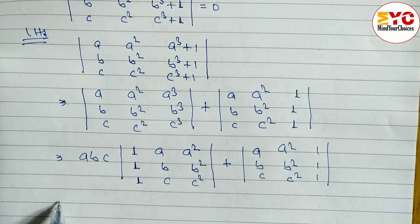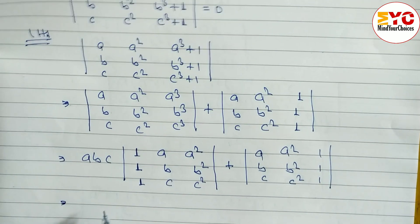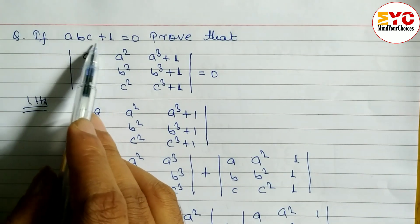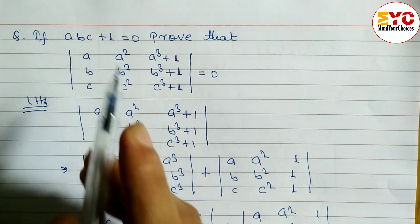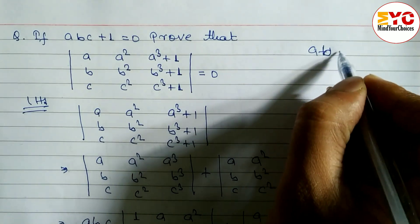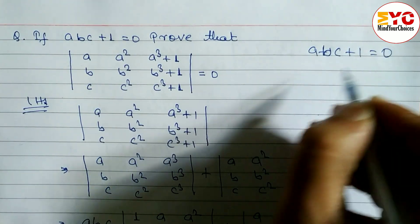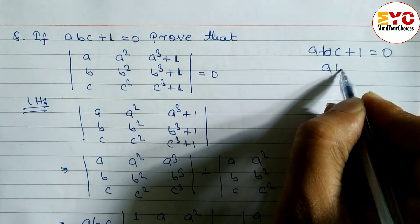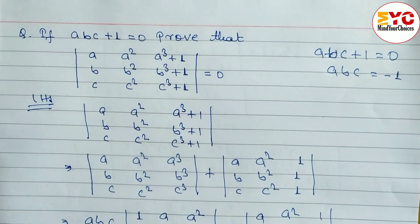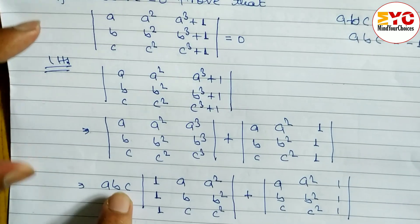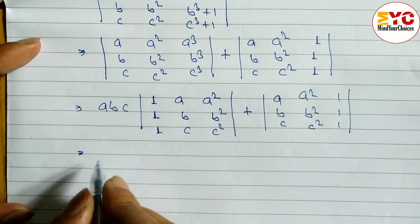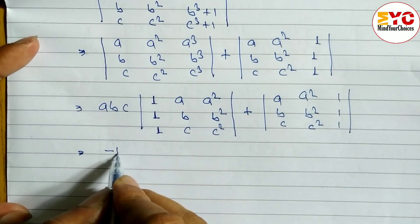Now a condition is given: abc plus 1 equals zero, so abc equals minus one. In place of abc we write minus one. So the first determinant becomes: minus one times the matrix with rows 1, a, a squared; 1, b, b squared; 1, c, c squared.